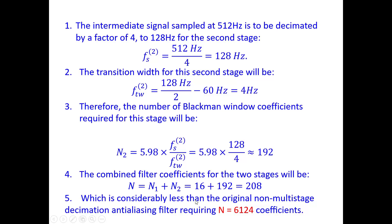This is considerably less than the original single-stage decimation anti-aliasing filter requiring N = 6124 coefficients. Comparing 208 and 6124, this reduction has come only by using multi-stage decimation filters. The number of coefficients required for the filters has been reduced from 6124 to 208 — that is the advantage of following a multi-stage approach.